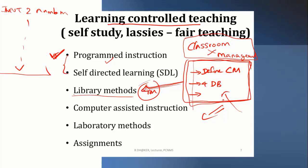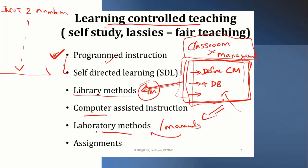In learning-controlled teaching, our control is based on the learning — the learner has to go to the library and find the answer to the question. Computer-assisted instruction and laboratory method are also options. With manuals provided, laboratory users can follow them. Another common method under learning-controlled teaching is the assignment.